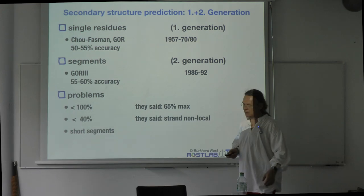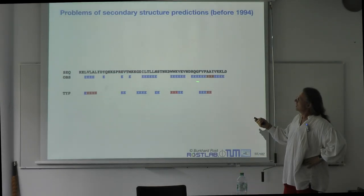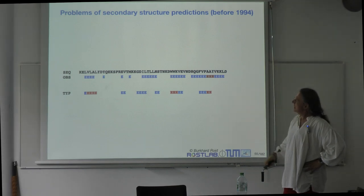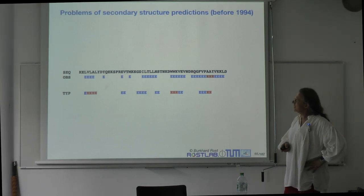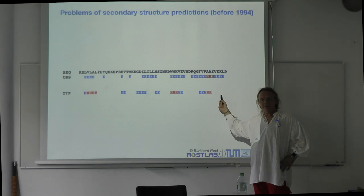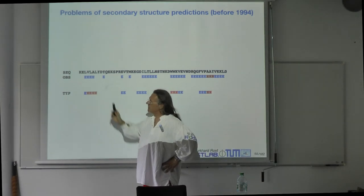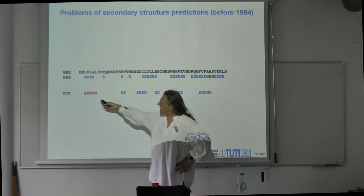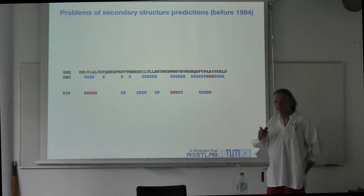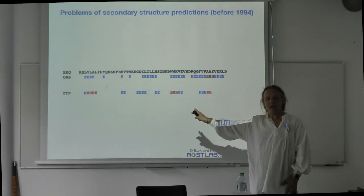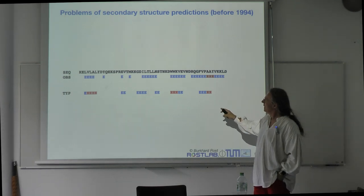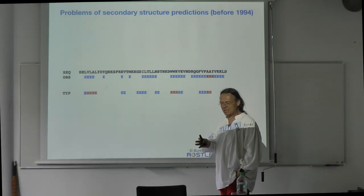There is another issue with traditional methods: they predict short segments. For instance, a prediction might output a single isolated helix residue, though we know helices cannot be two residues long. The usefulness of a prediction that has some elements right — approximately 55% Q3 — is limited because the segments are too short. We need to address these problems: not reaching 100%, poor beta strand performance, and short predicted segments.